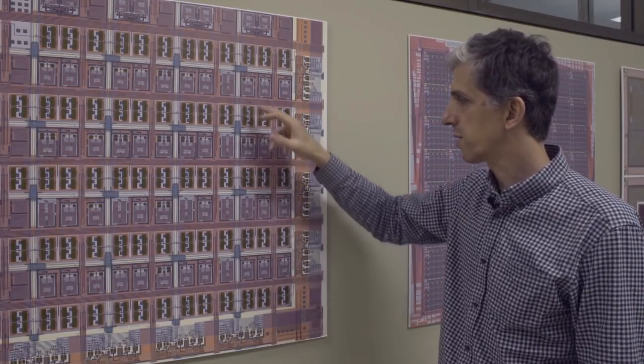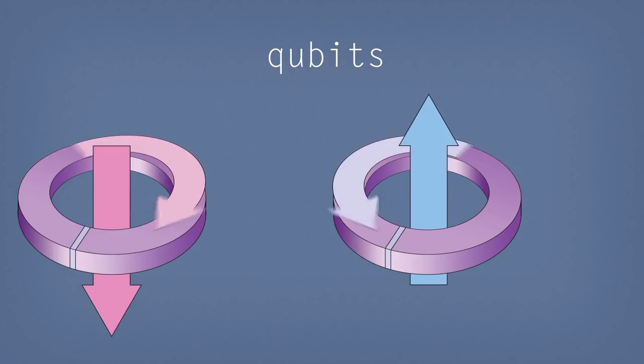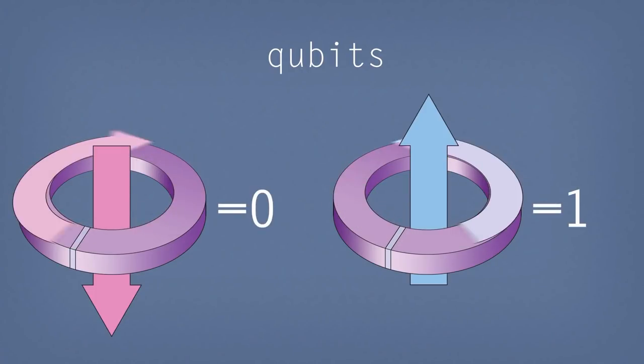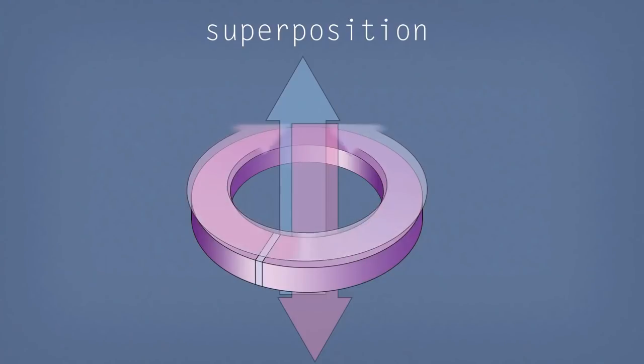A qubit is engineered so that there are two stable states corresponding to circulating current going clockwise or counterclockwise. And associated with those two stable states are magnetic fields either coming out of the surface or into the surface. And they correspond to the 0 and the 1 state respectively for the qubit. Of course, a qubit can be in a superposition of 0 and 1. And so in this case, that means that these qubits can be in a superposition of those two circulating current states going clockwise and counterclockwise at the same time.